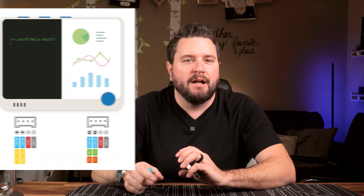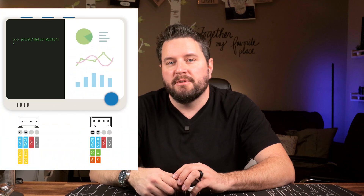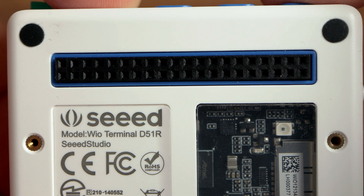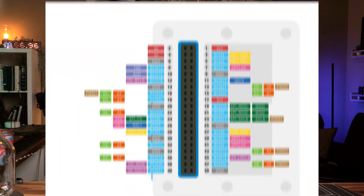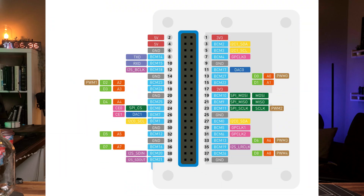Now, if you don't want to use the Grove system, you can use the pinout to connect your own custom devices, which is actually what we're going to be doing today. If you flip it onto the back, you'll notice the 40-pin connector that directly interfaces with the Raspberry Pi's GPIO interface. This means you can use the WIO Terminal as a hat for a project that might need a display or some additional sensors. You can also use this header for non-Pi projects, as it has a detailed pinout.